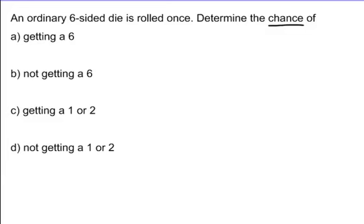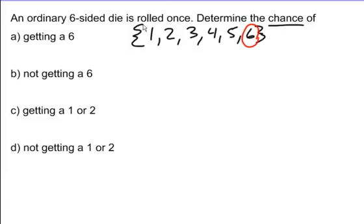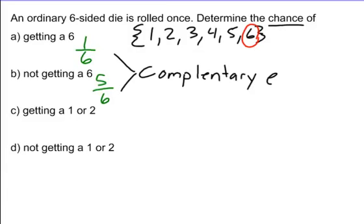If we roll the dice, like we talked about, we have six different outcomes: one, two, three, four, five, or six. What are the chances of getting a six? Well, there is one chance out of six possible outcomes. So we have one opportunity of getting a six and five opportunities of not getting a six.